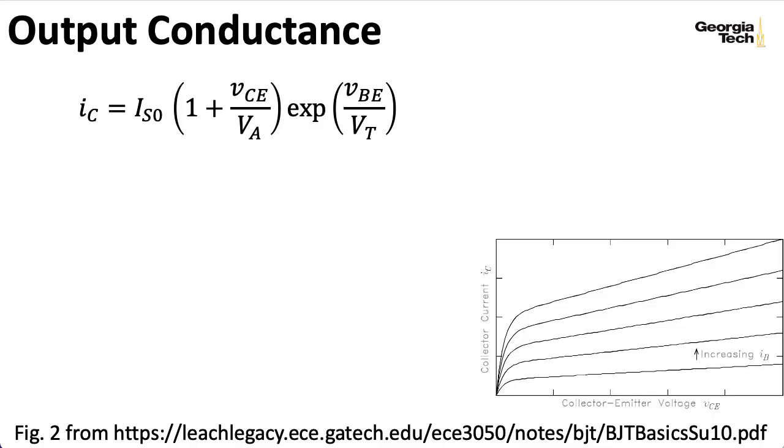It will be useful to have the slope of this kind of output characteristic curve, and we're going to call that the output conductance. But you'll see I'll very quickly flip this over and turn it into an output resistance. So here's the expression for the collector current, and let's take the partial derivative of that expression with respect to the collector emitter voltage.